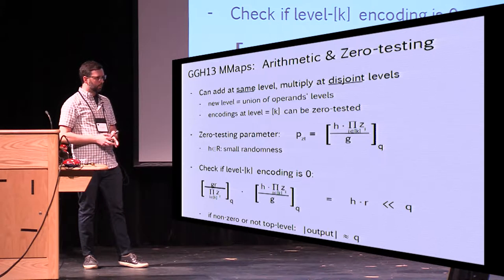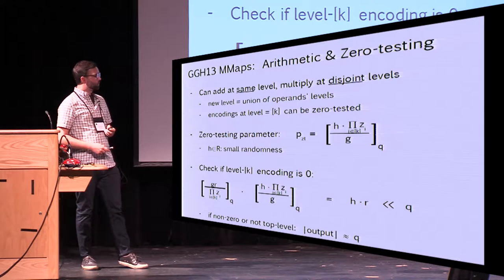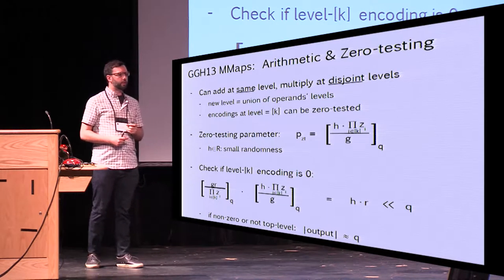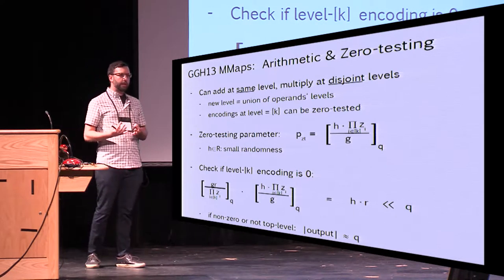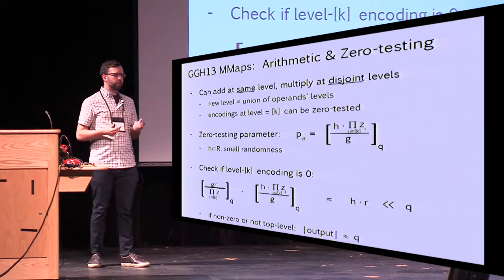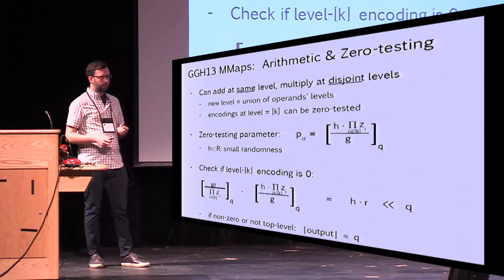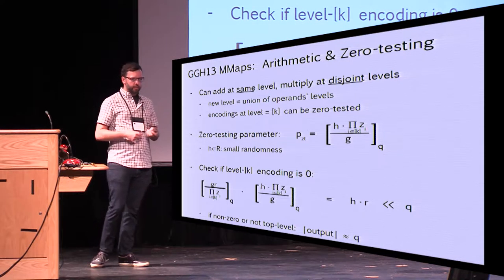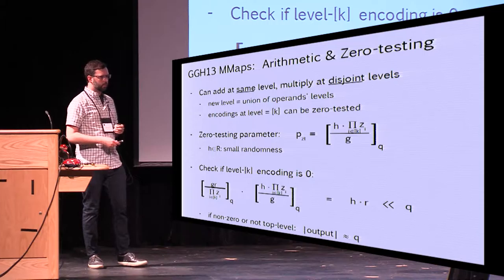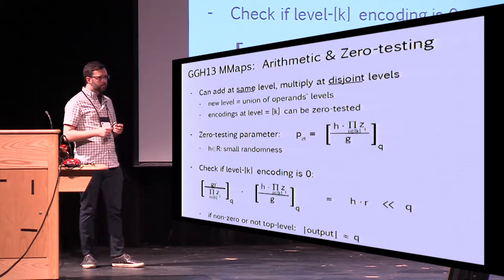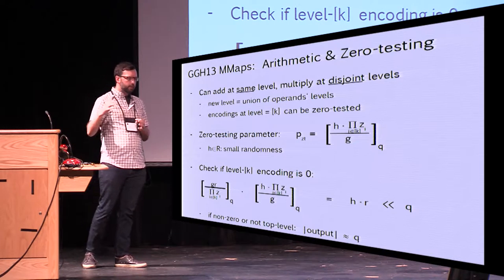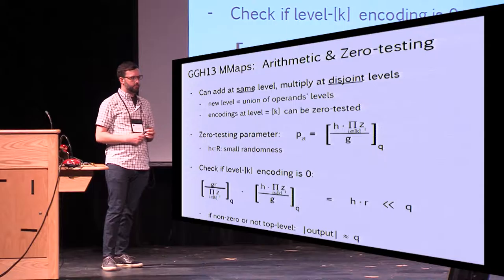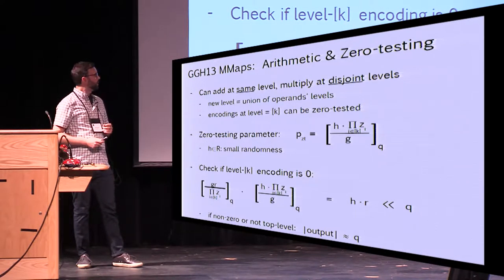How does the arithmetic work? You can add at the same level, and you can multiply at disjoint levels — if your two levels are disjoint sets, you can multiply; otherwise you're not allowed to. In both cases, the new level is the union of the operand levels. The randomness grows a little bit, but you can tolerate up to degree K computation, and these parameters are all chosen such that functionality is preserved.